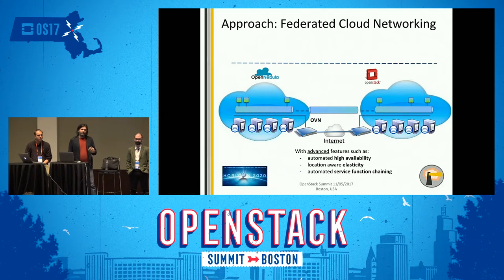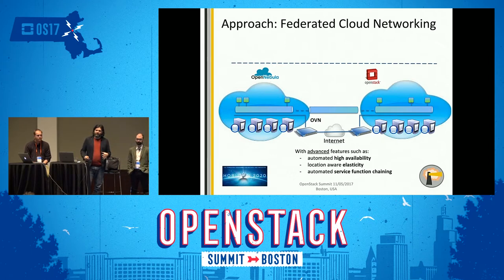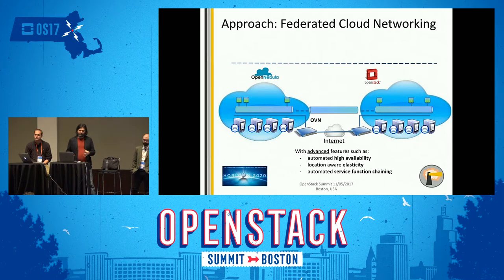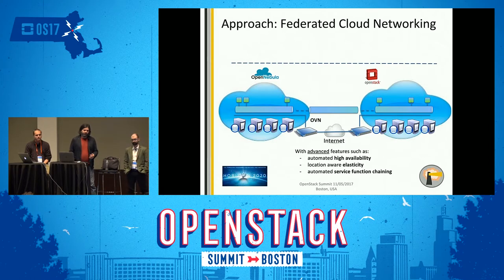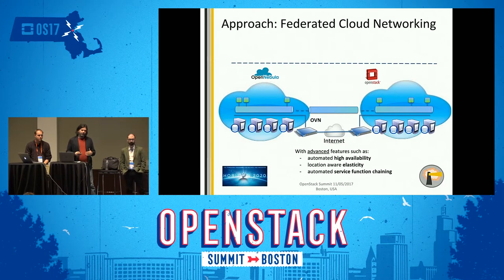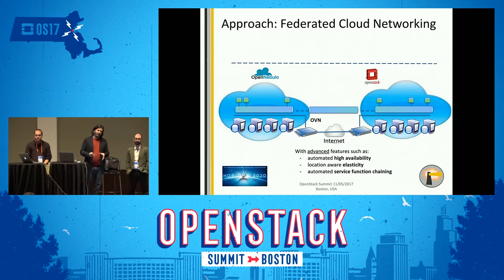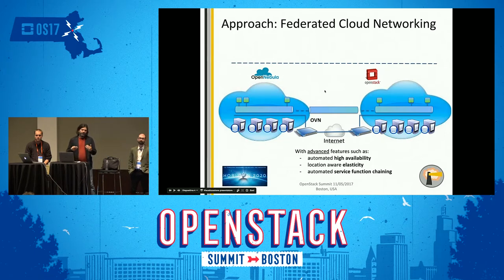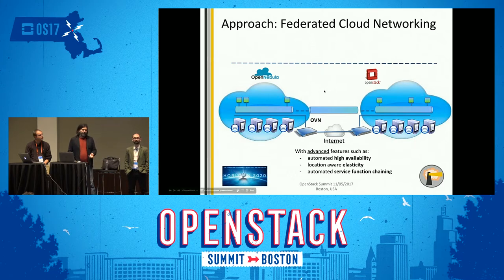The approach is federating the cloud networks. This project embraces two middlewares in particular: OpenStack and OpenNebula. We have a number of developments providing basic mechanisms for federating cloud networks, and advanced features on top of that such as automated high availability, location-aware elasticity, and automated service function chaining.